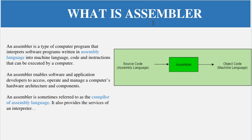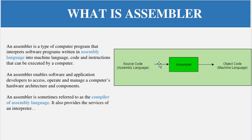If you see the figure here, assembler is basically a software program which takes the input of source code of assembly language and converts it into machine language, or you can say the zero and one form. So assembler is simply a software program which takes source code of assembly language and converts it into object code or machine language code.